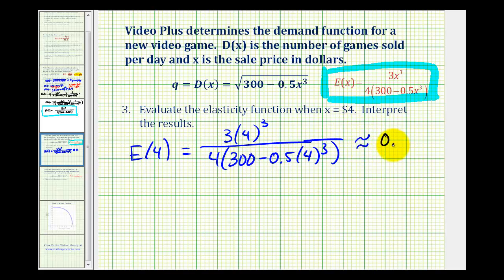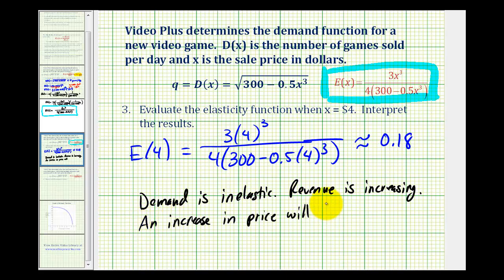So this is obviously less than 1, which means the demand is inelastic, revenue is increasing, and an increase in price will bring an increase in revenue.